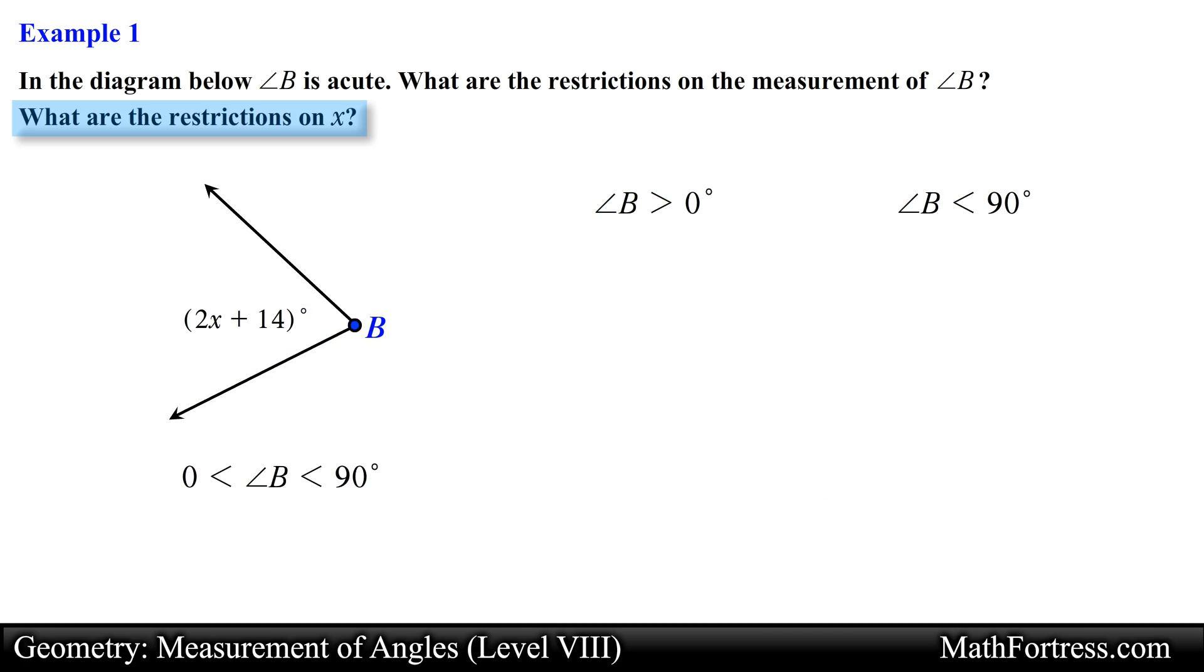Now the next question is asking us to determine the restrictions on the variable x. In other words, what are the values of x that will make the angle acute? We can determine this by using the inequalities from the previous question. These inequalities are the geometric relations of the problem. All that is left to do is to replace angle B with the algebraic expression that is given and solve both inequalities.